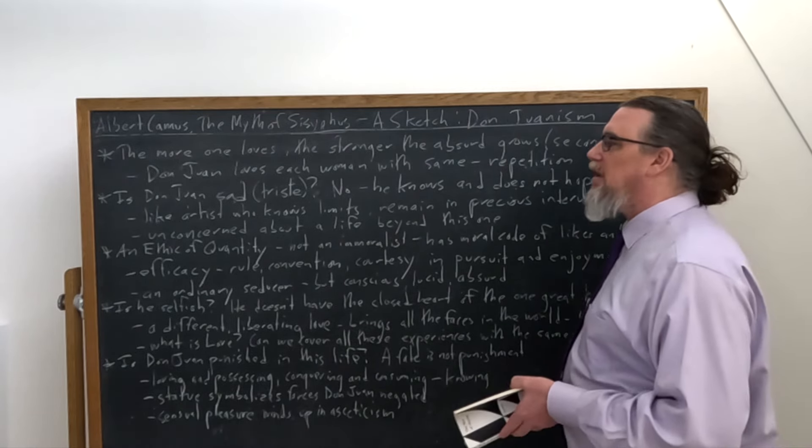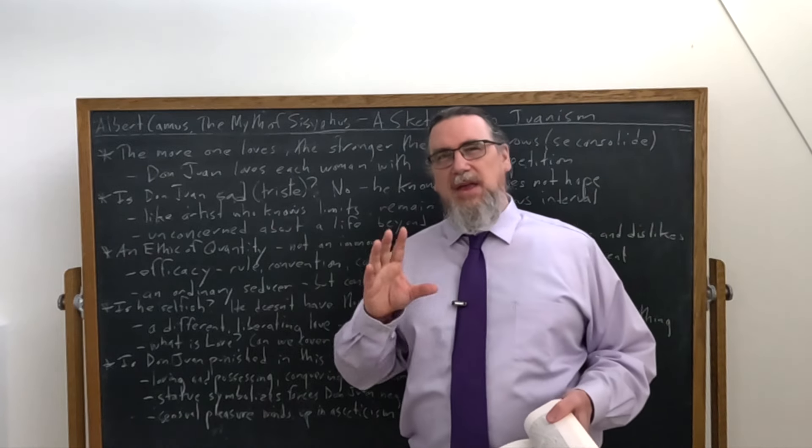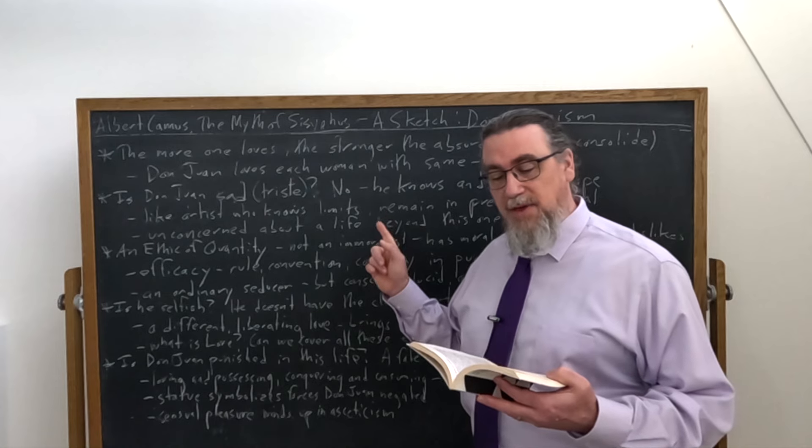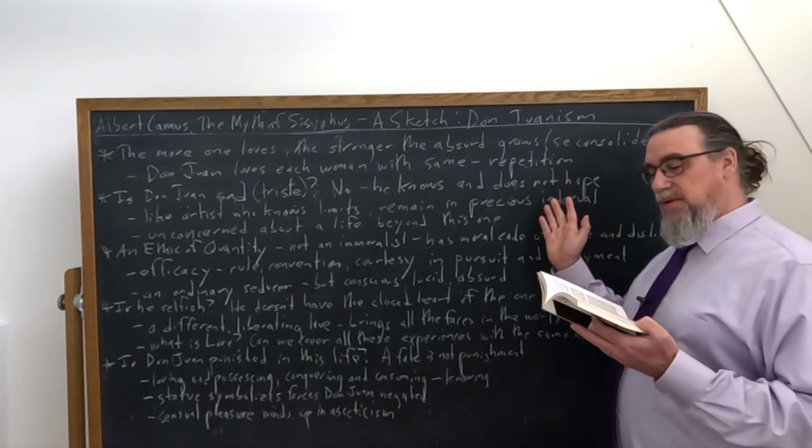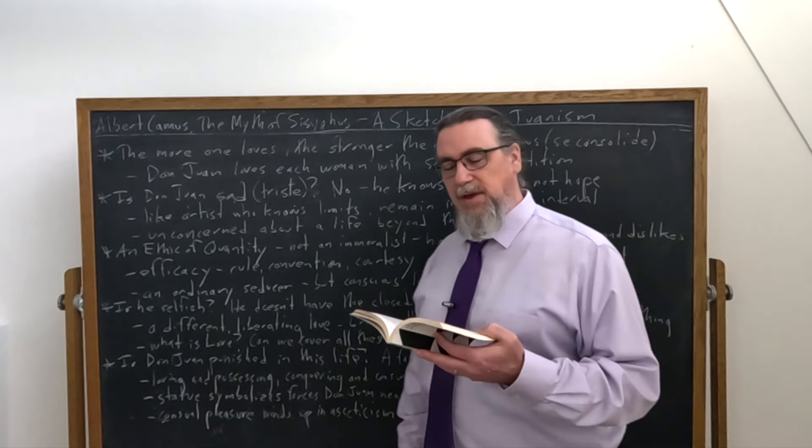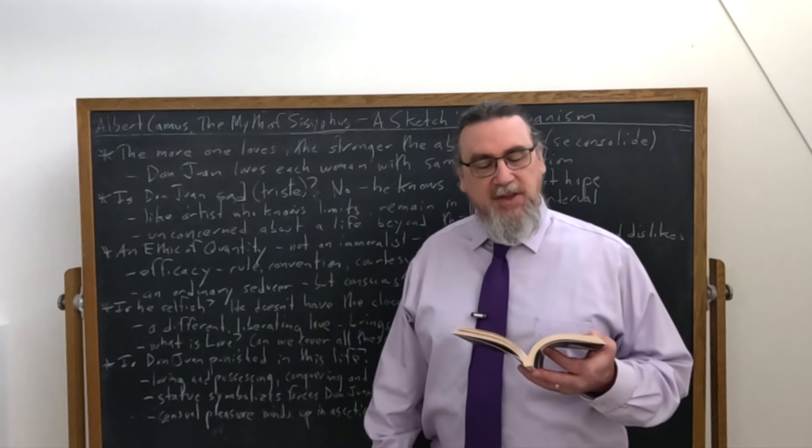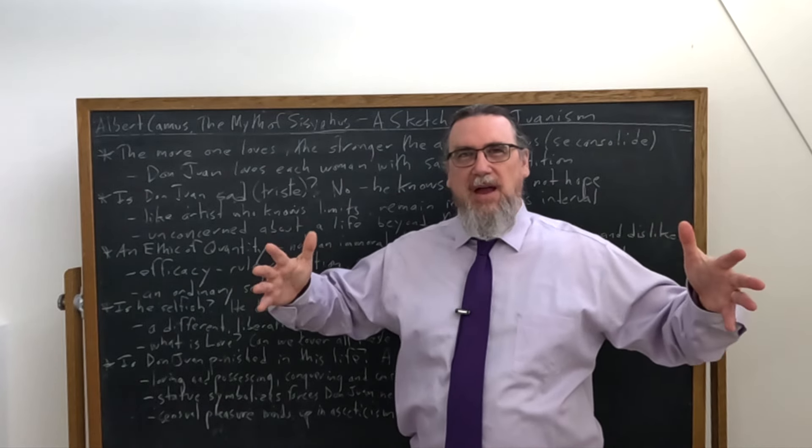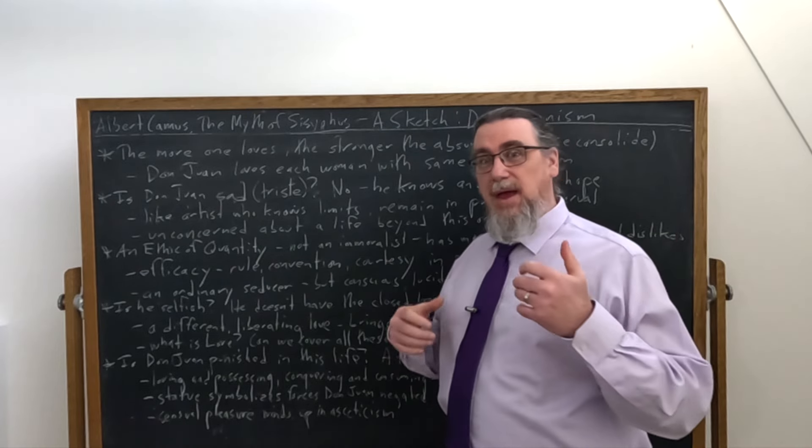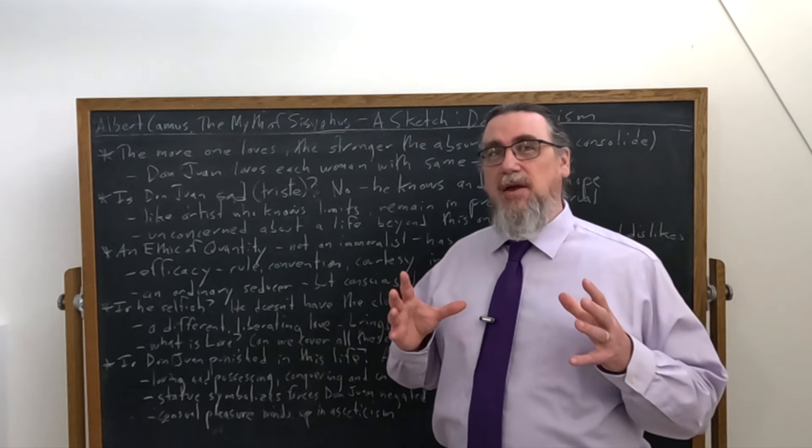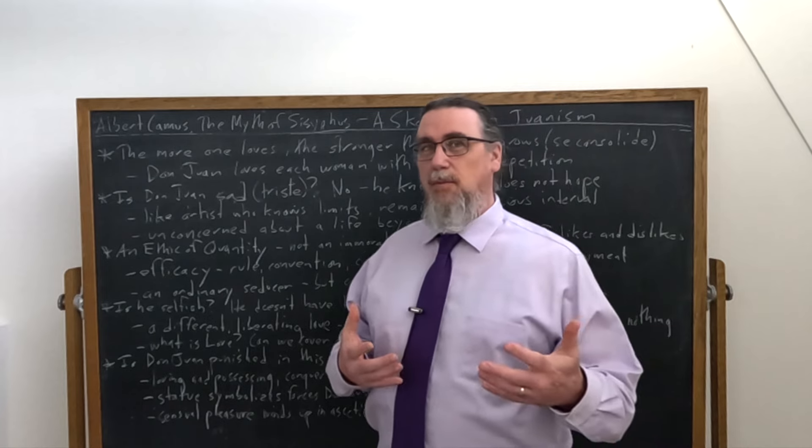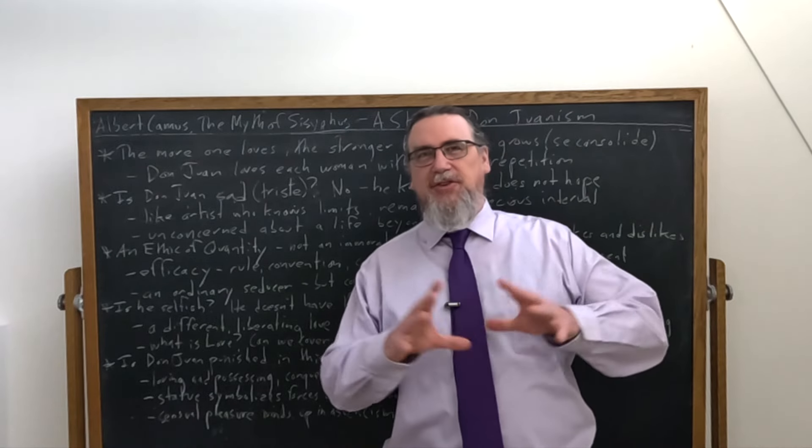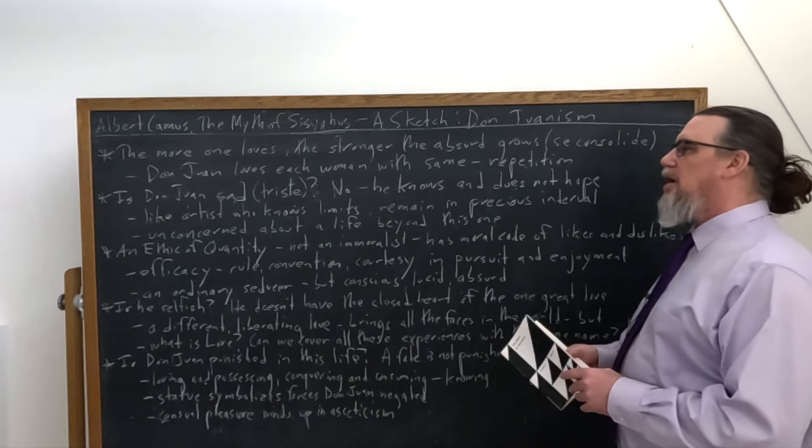And then he's got this interesting comparison. He says, Don Juan is like an artist. So he's not saying he is an artist. He's like an artist who knows his limits, never go beyond them. And in that precarious interval in which they take their spiritual stand, enjoy all the wonderful ease of masters. And he says that is indeed genius, the intelligence that knows its frontiers. So if you can confine yourself to this world, this life, what it is that you have in front of you and perhaps in the immediate future, then you can actually enjoy more freedom, more enjoyment, more happiness. You can't do so by simply doing something and then sticking with that forever. You have to engage as Don Juan does in a kind of repetition.